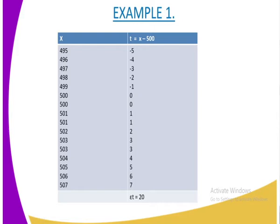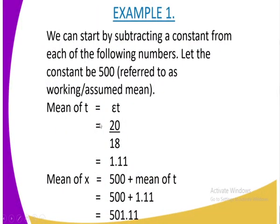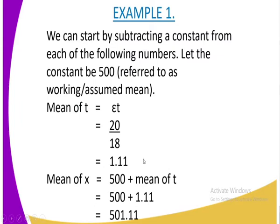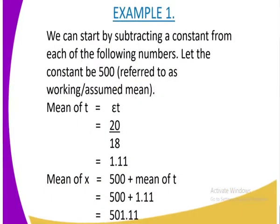We have some negative values and some positive values in column T. When you add negative 5, negative 4, negative 3, negative 2 onwards, the summation of T is 20. You get the mean of T by dividing the summation of T by the total number of quantities, which is 18, giving 20 divided by 18 equals 1.11. To get the actual mean, take the assumed mean 500 and add the mean of T: 500 plus 1.11 gives an actual mean of 501.11.